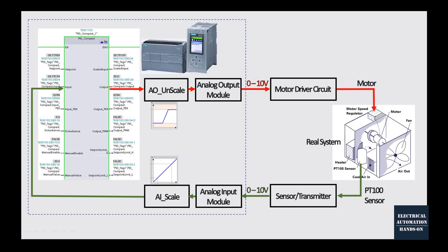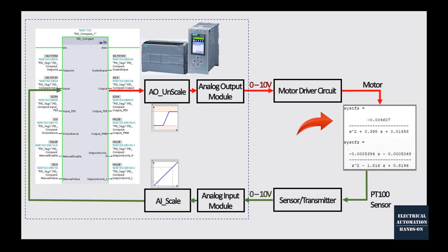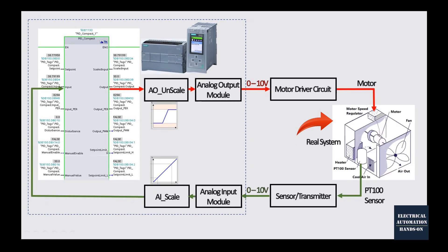If you already have the mathematical model of your controlled object, you can use your PLC PID controller to connect to this mathematical model and use it as your process object to test the PID gain, integral, and derivative parameters. And once the construction on site is finished, you can switch the system to the actual process.